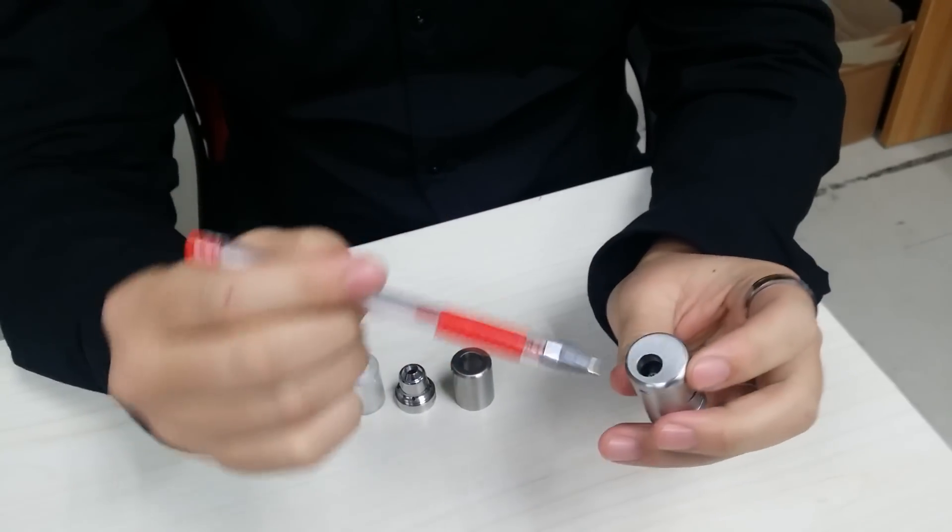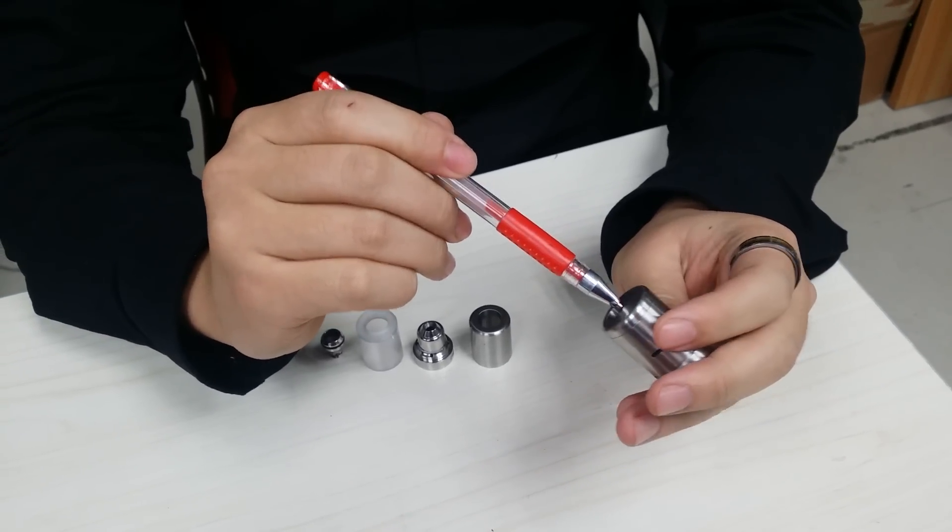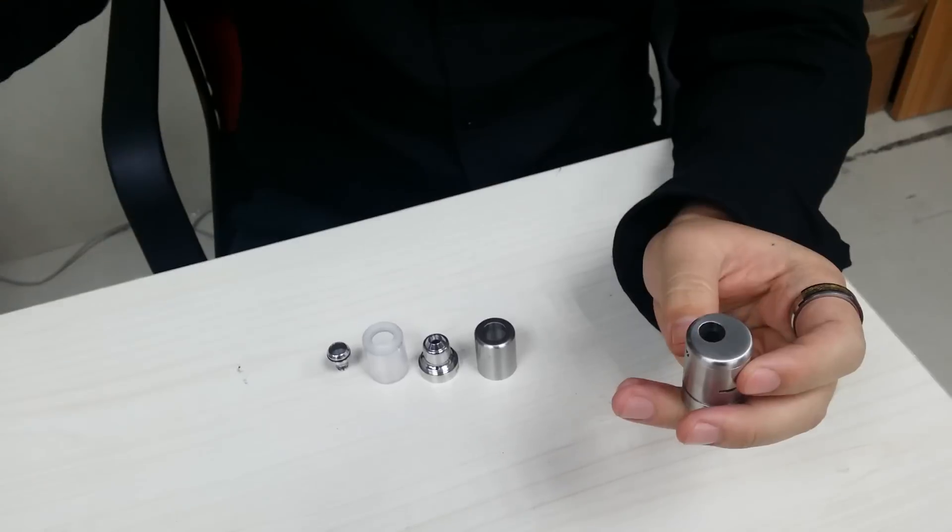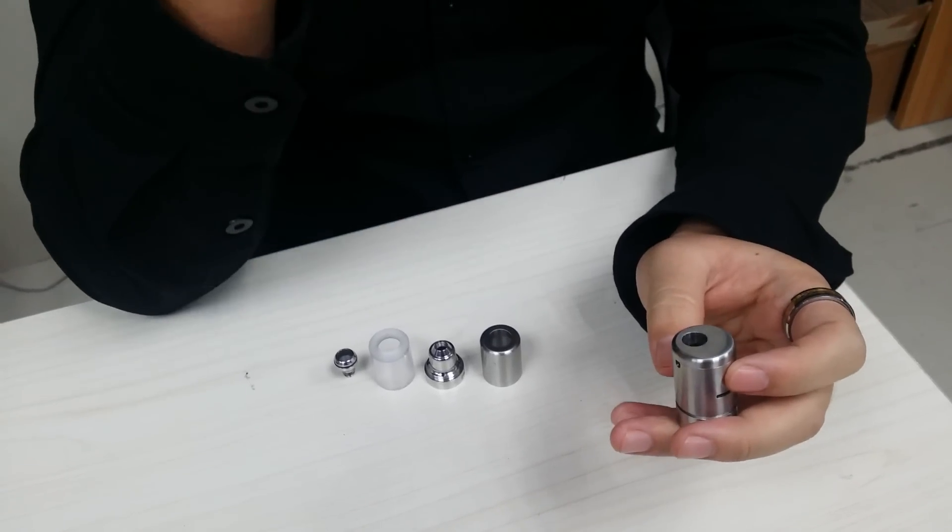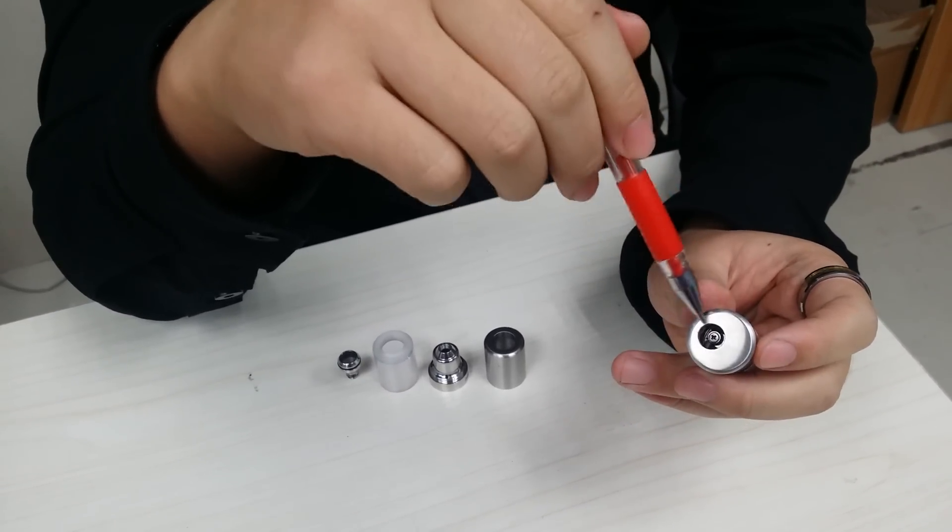And this part, for the dripping hole, is not in the central. This is because when we drip liquid in it, the juice will splash out. This will burn your tongue. So we make it on the side of the top part, make it on the side.